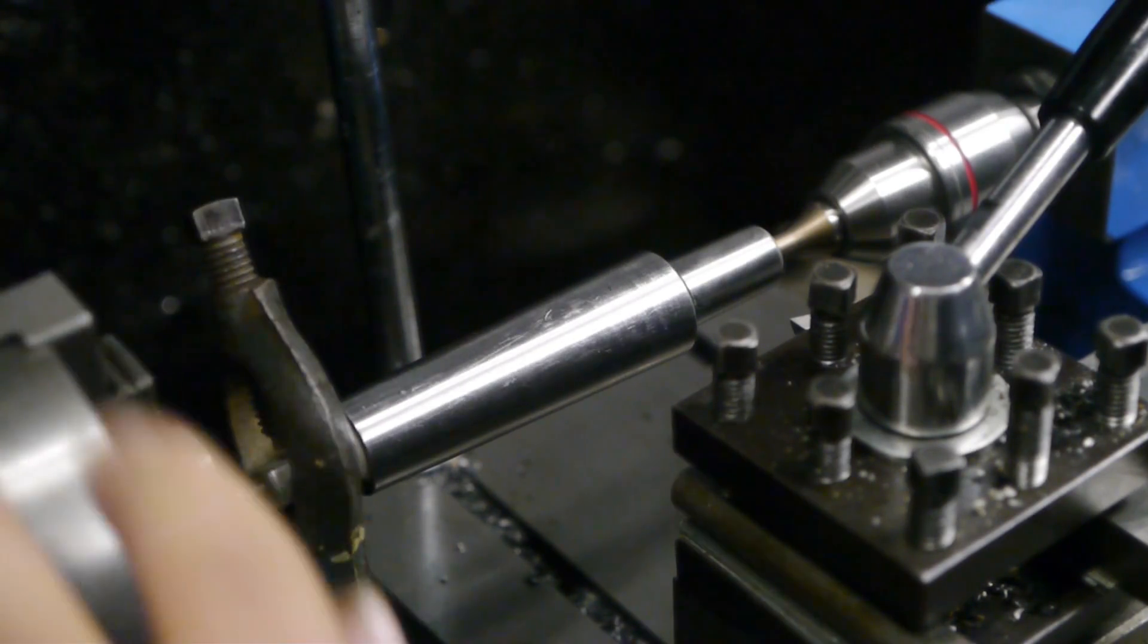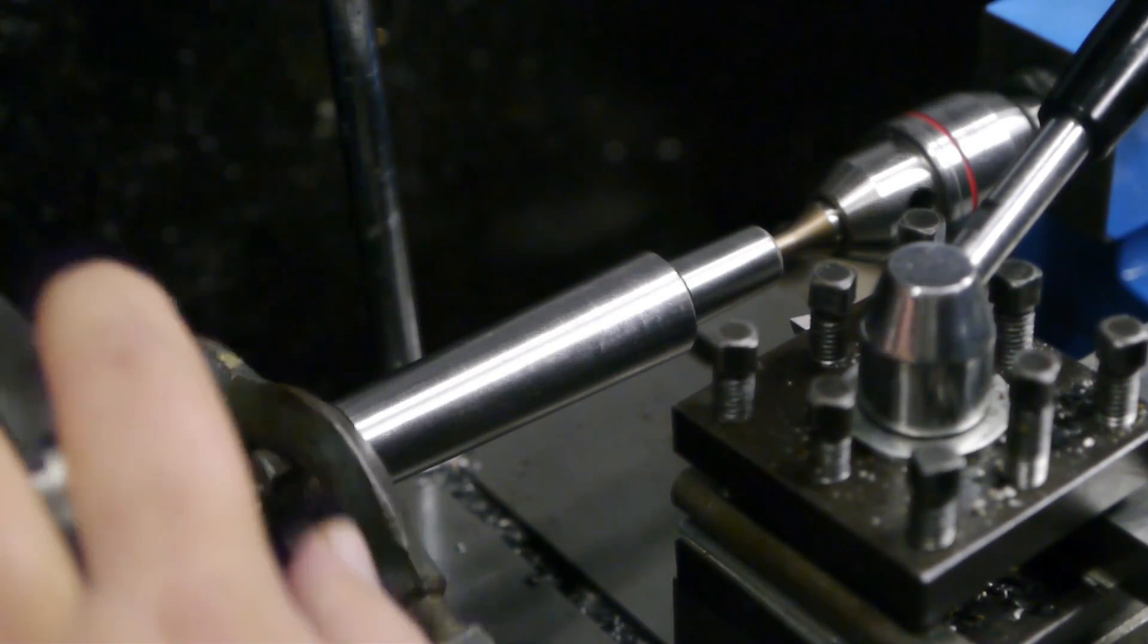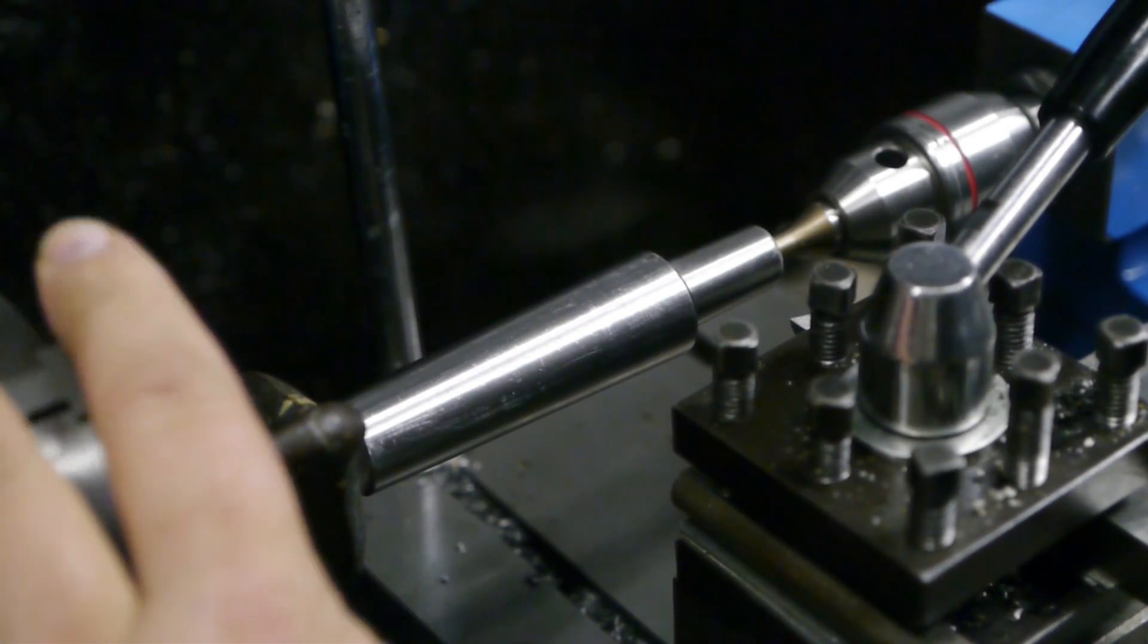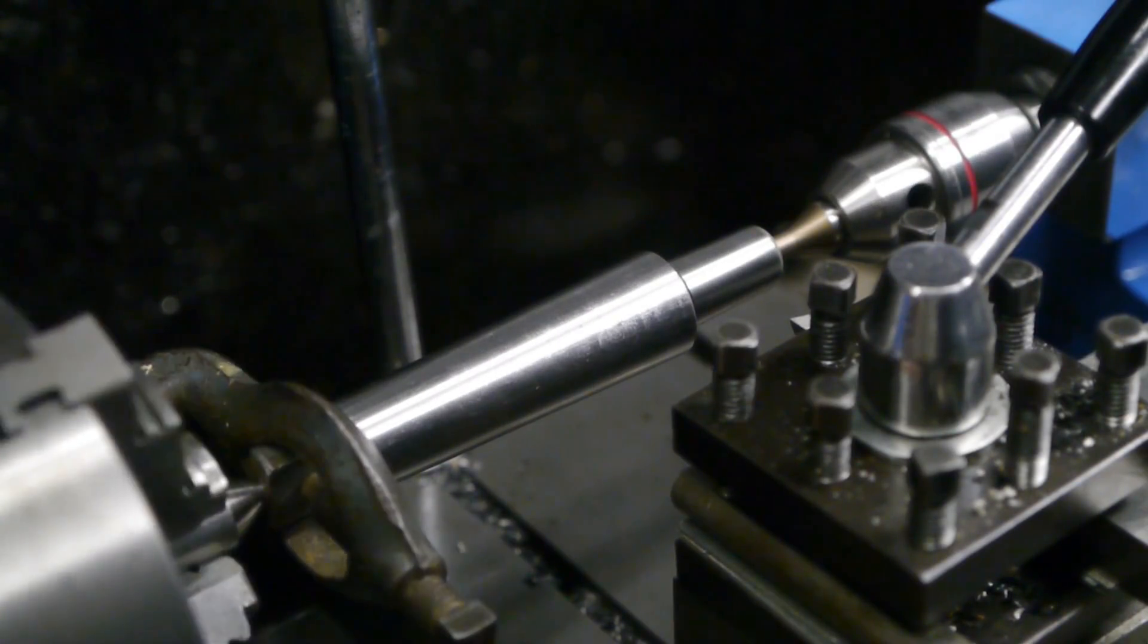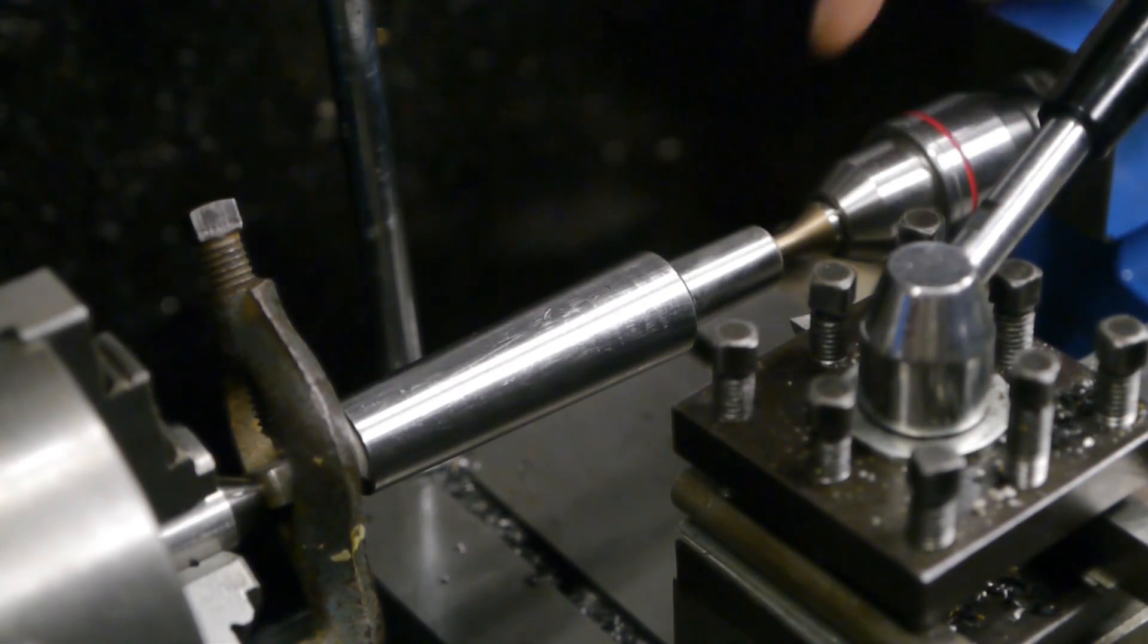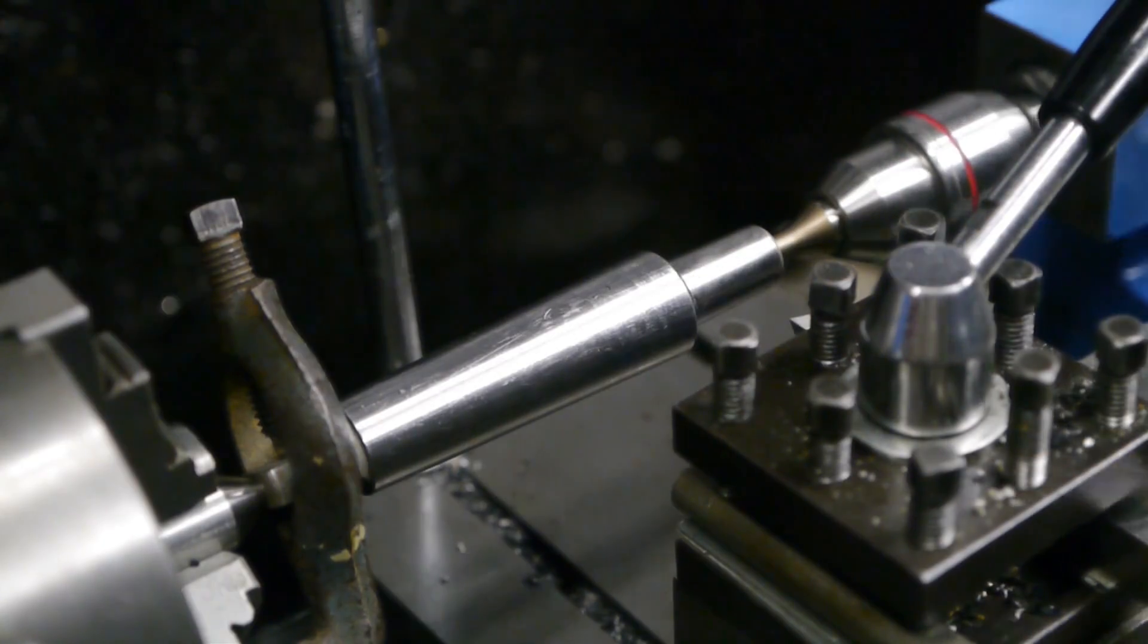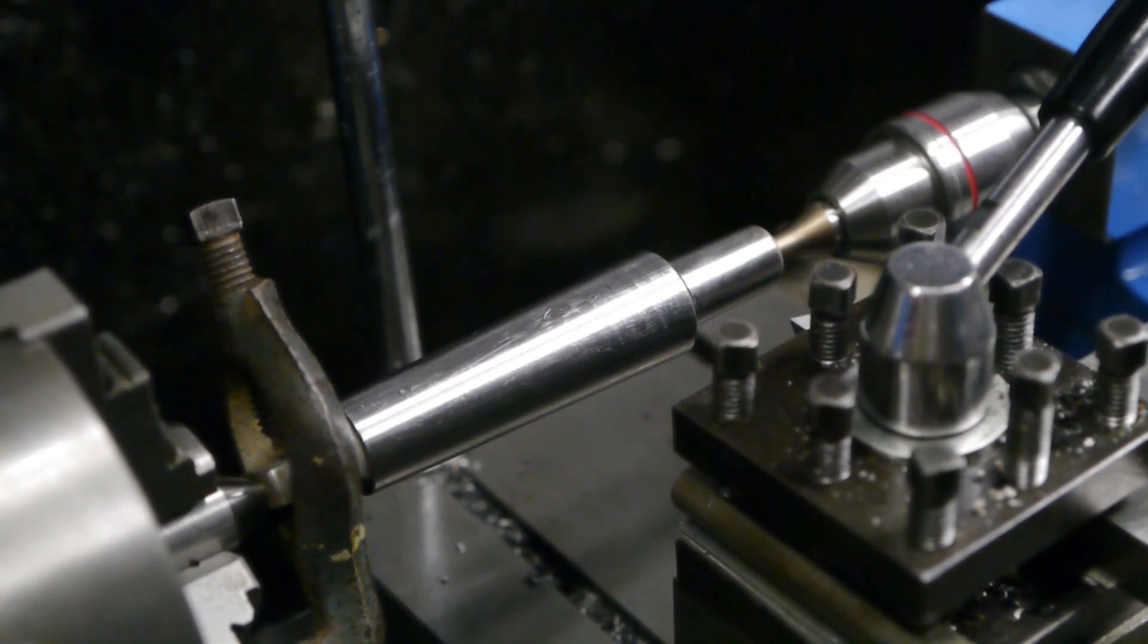The arbor is running within one hundredth of a millimeter, and that is pretty good considering there was some rust inside the center holes. So now I will turn this down to a little under 14 millimeters, 13.8 something like that, and cut a relief for the threading.